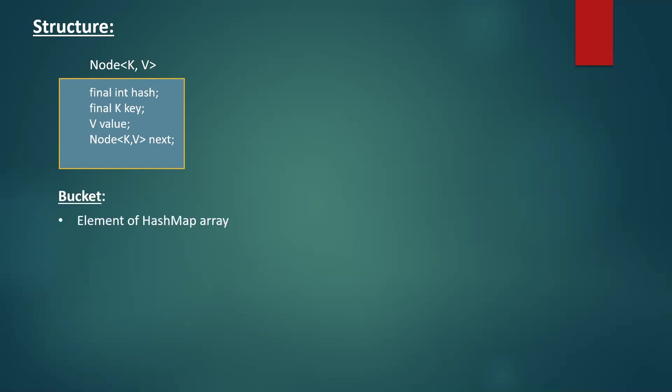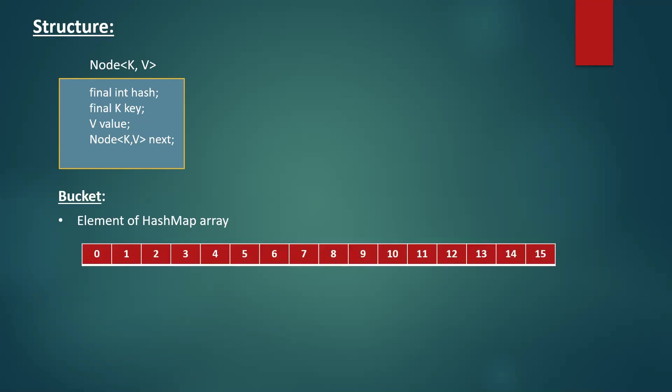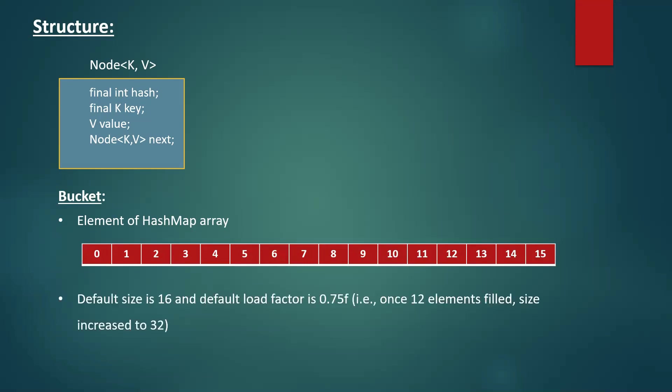We need to understand some terminology before we go into the internal working. A bucket is an element of the HashMap array. The default size of a HashMap is 16 — we can specify the size, but if not mentioned the default is 16. The default load factor is 0.75, which means the load factor decides when to increase the HashMap array. Once 12 elements are filled, the size is doubled to 32. Each bucket can have more than one node.